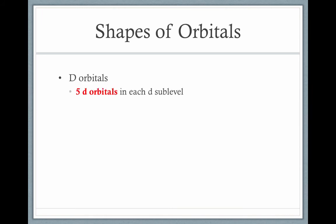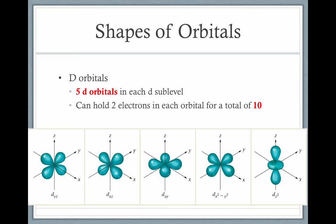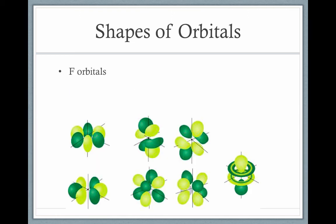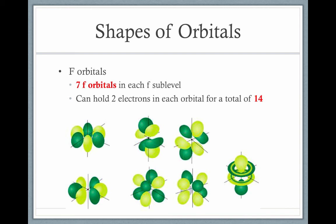D orbitals have five orbitals in each sublevel. Again, each can hold two electrons, for a total of ten electrons in the d sublevel. Their shapes are quite complicated, so you don't need to be able to recognize these — just the s and the p. But we can put two electrons in each of the five d orbitals, for a total of ten electrons in a d sublevel. Finally, f orbitals have seven orbitals per f sublevel, and they can hold two electrons in each, for a total of fourteen electrons. Again, these shapes are very complicated, so you don't need to memorize or recognize these shapes. We can put two electrons in each of the seven f orbitals, for a total of fourteen electrons.